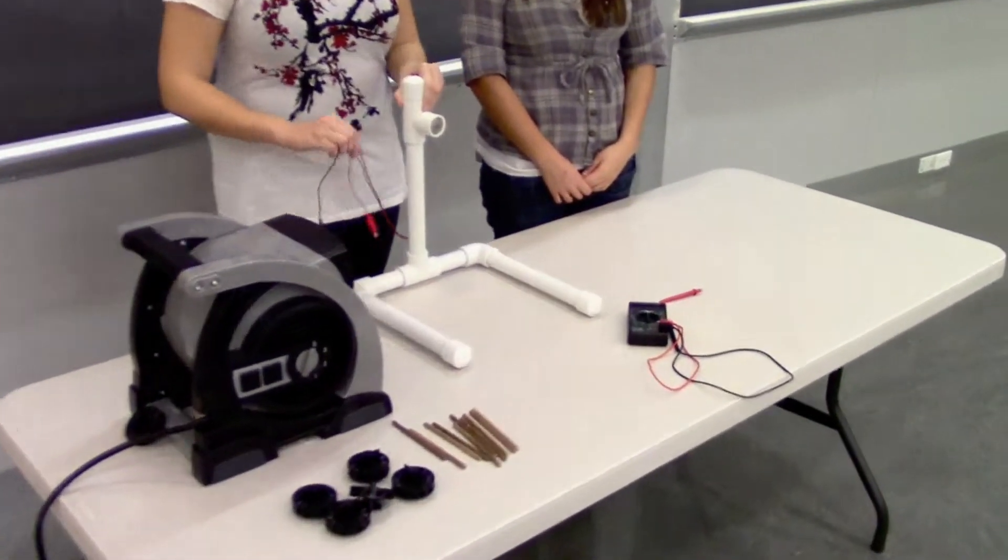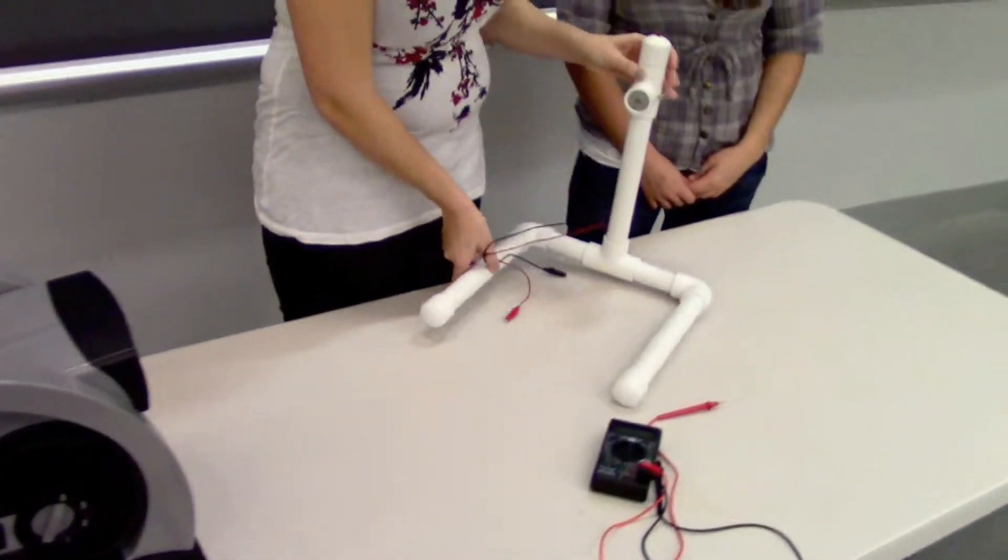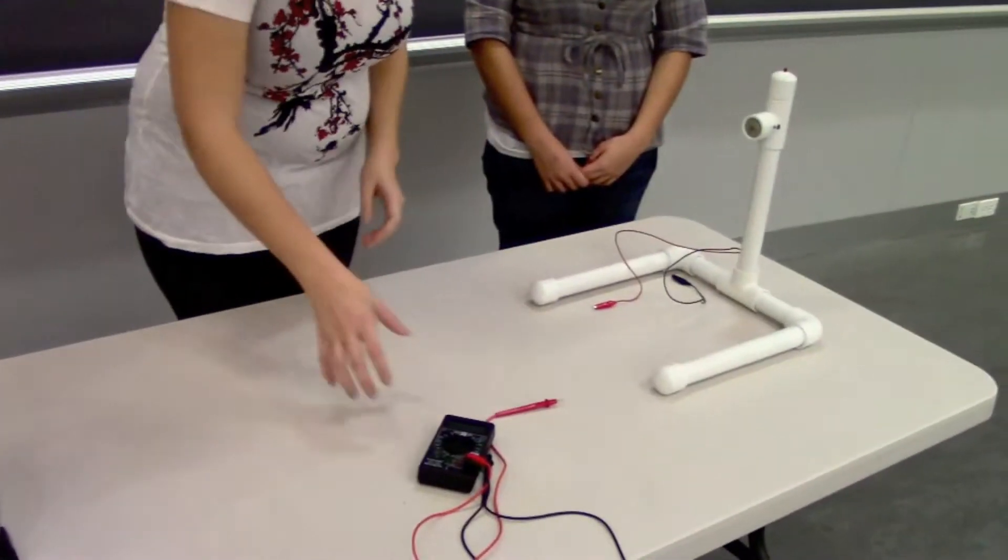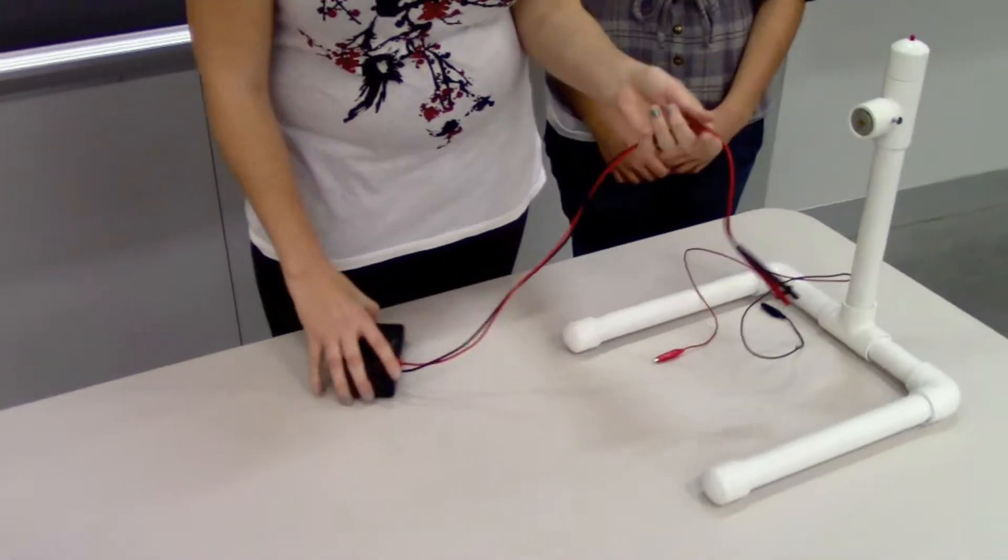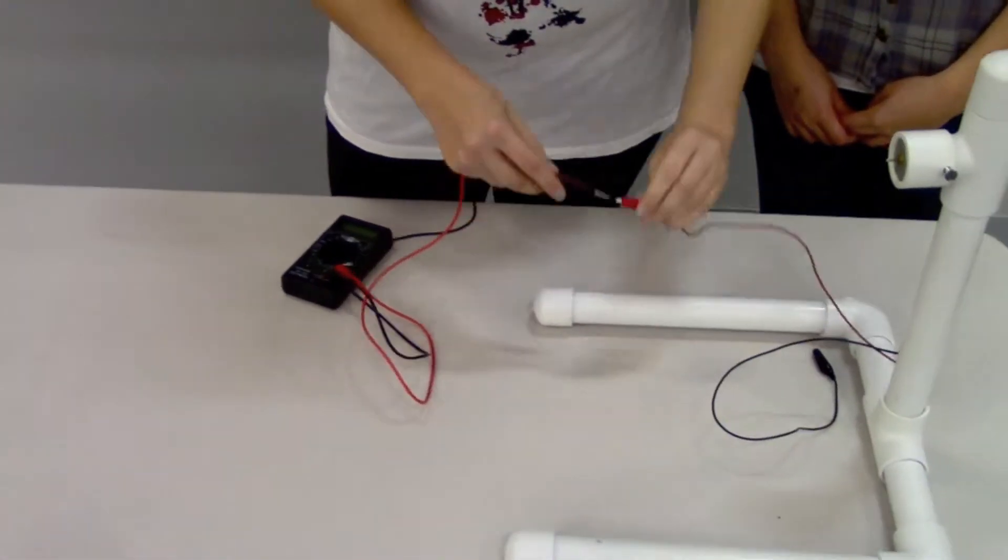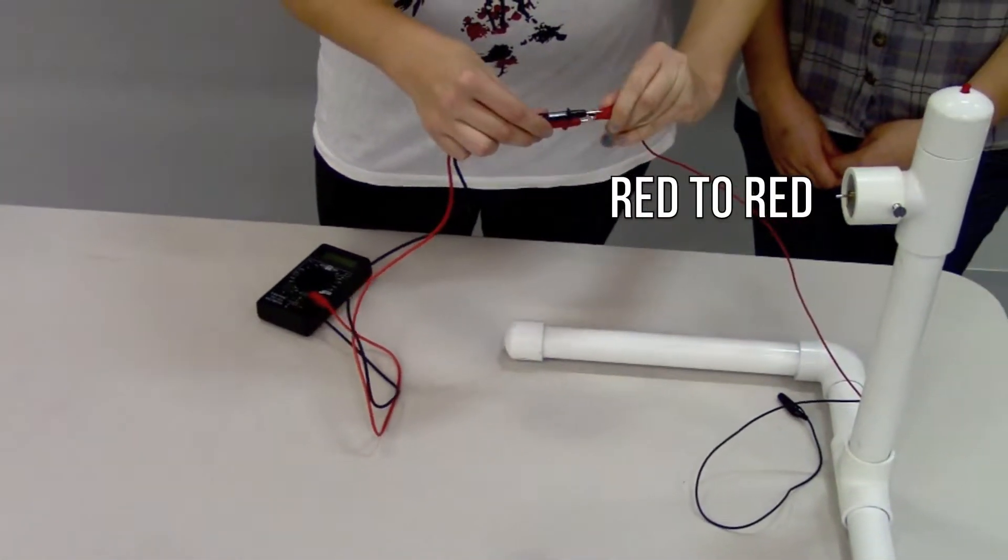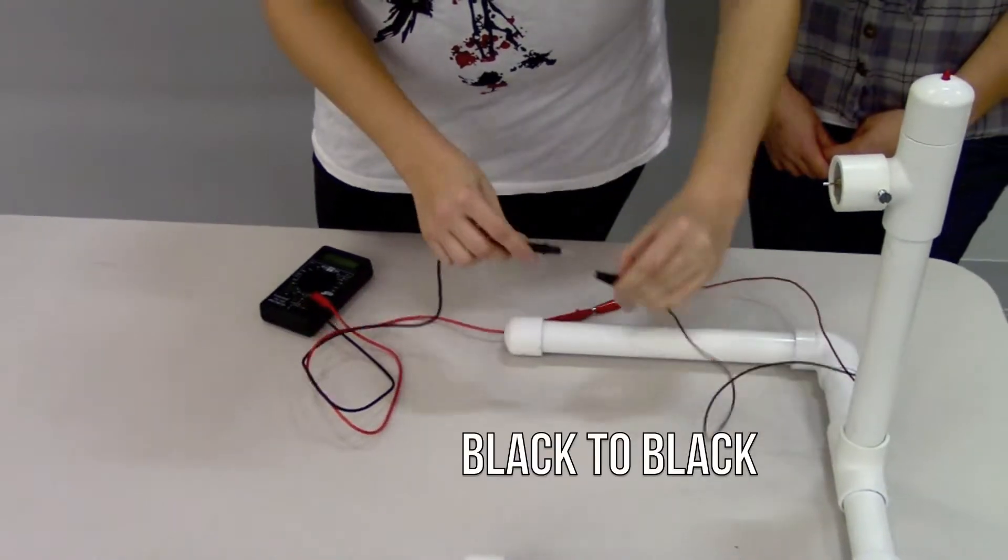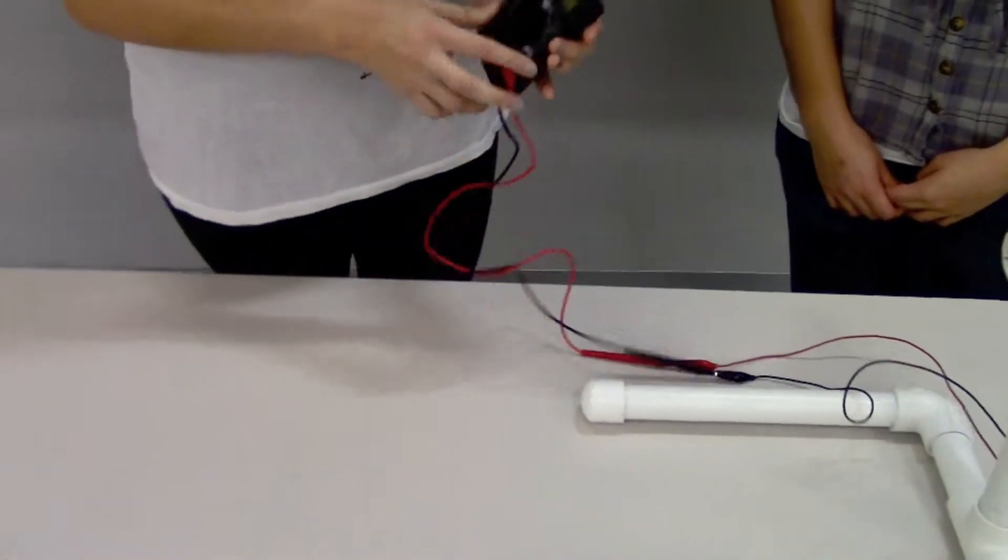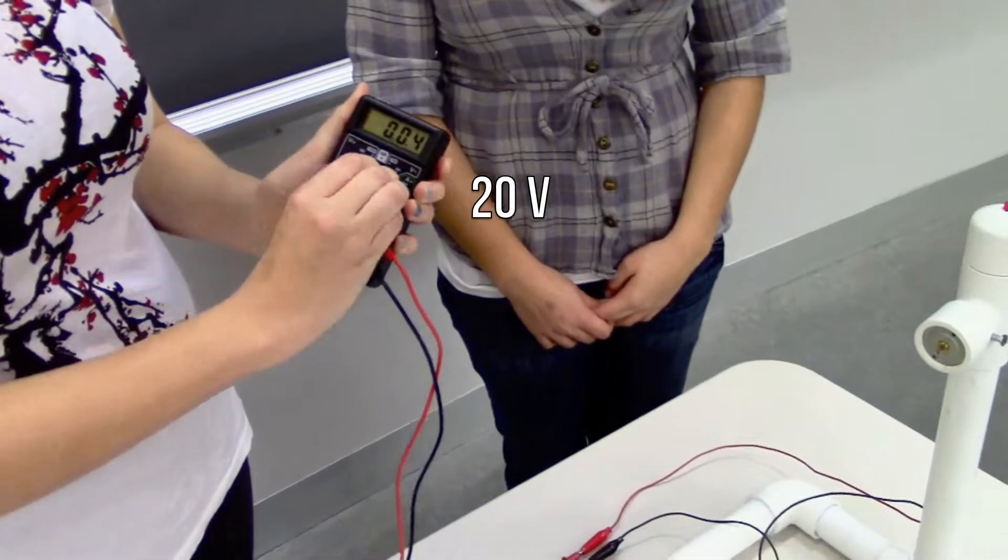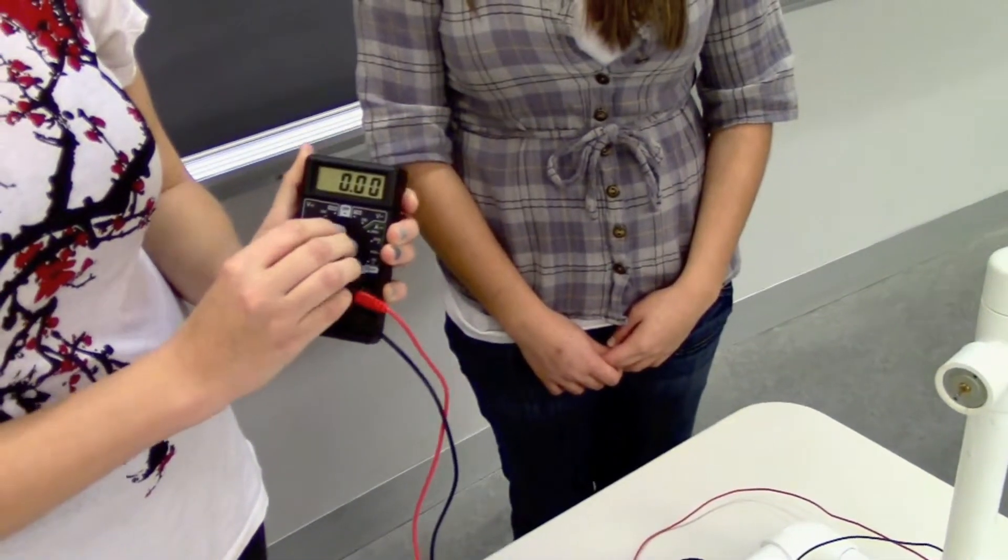Then you will connect the multimeter to the wind turbine stand by connecting the red pins and the black pins. Then turn the multimeter on to 20 volts. If you don't see a display, try turning it off and on. If you still don't see a display, you can check the battery.